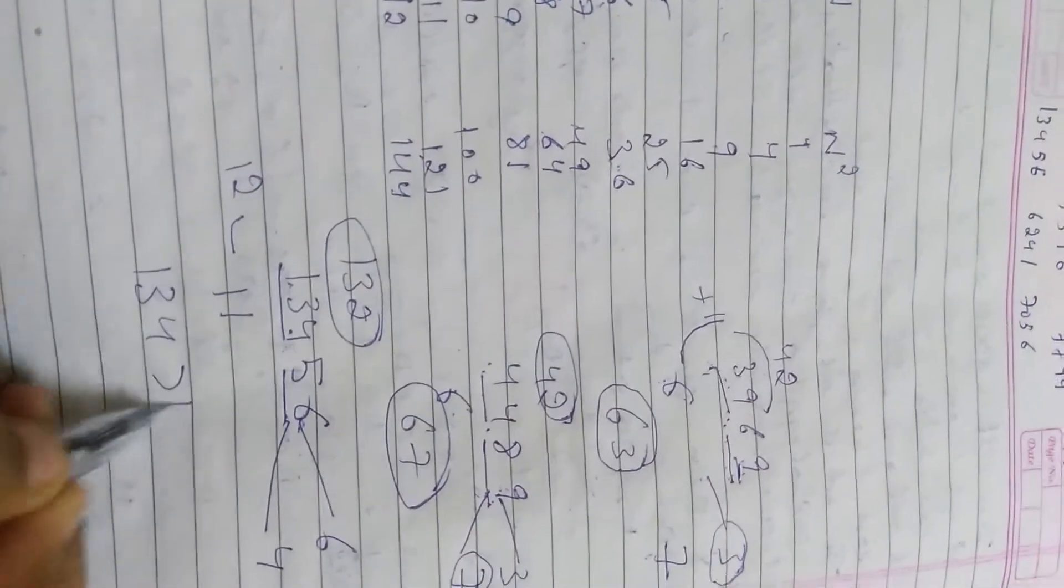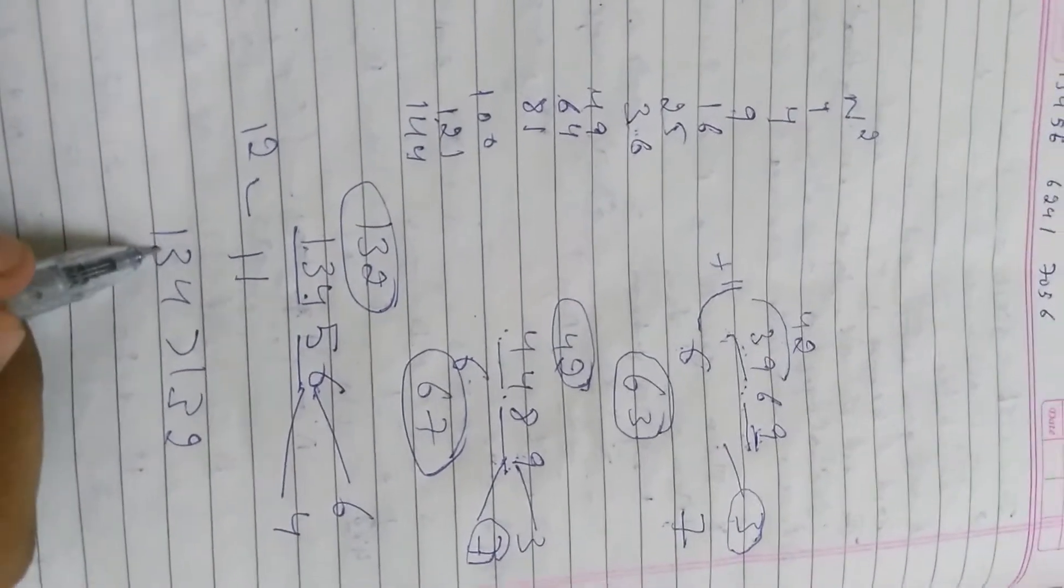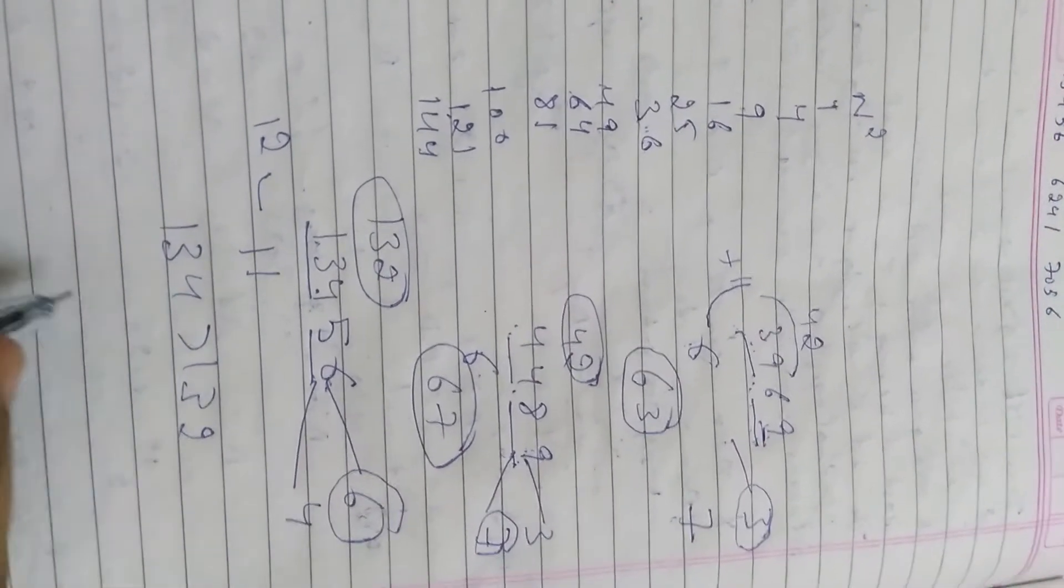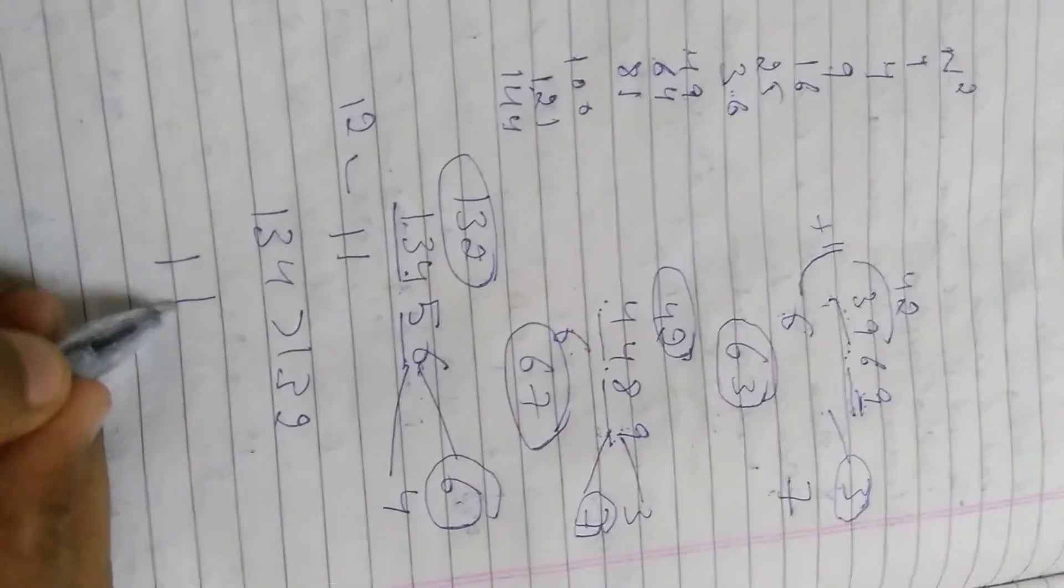134 is greater than 132. If it is greater than 132, then we should take the number greater, not smaller. So our answer is 116.